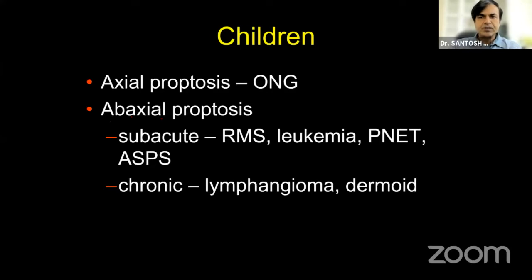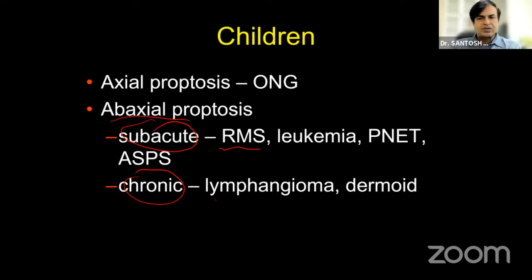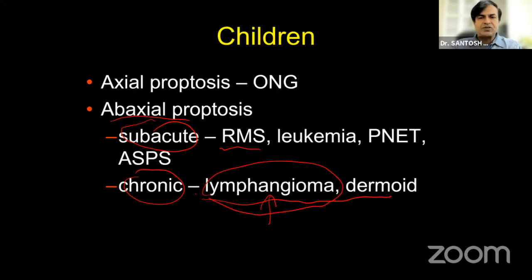If there is abaxial proptosis, classify it further as acute, subacute, or chronic. Acute abaxial proptosis is mainly because of infection, which Lakshmi has already spoken about. If it's subacute abaxial proptosis, the possibilities include rhabdomyosarcoma, leukemia, primitive neuroectodermal tumor, and alveolar sarcoma. If it's chronic, then it is either lymphangioma or dermoid. In the setting of chronic proptosis with acute exacerbation, it is generally lymphangioma with intralesional hemorrhage or formation of a chocolate cyst.